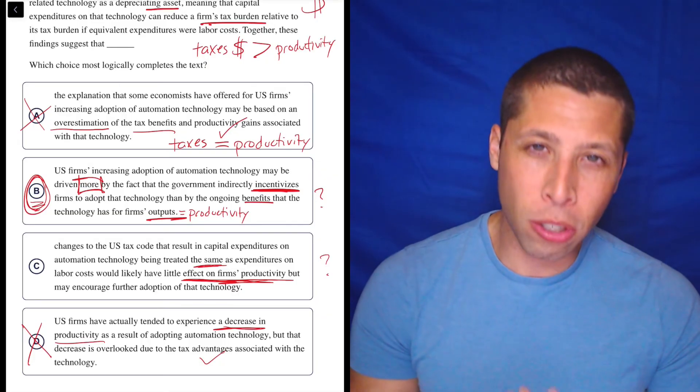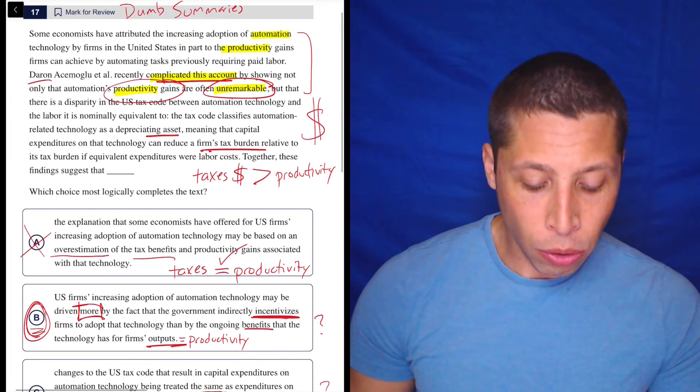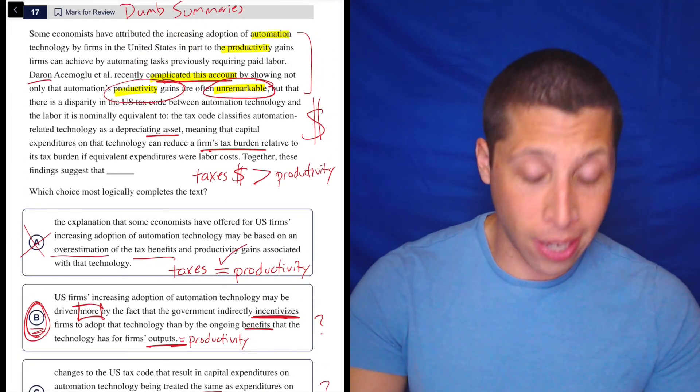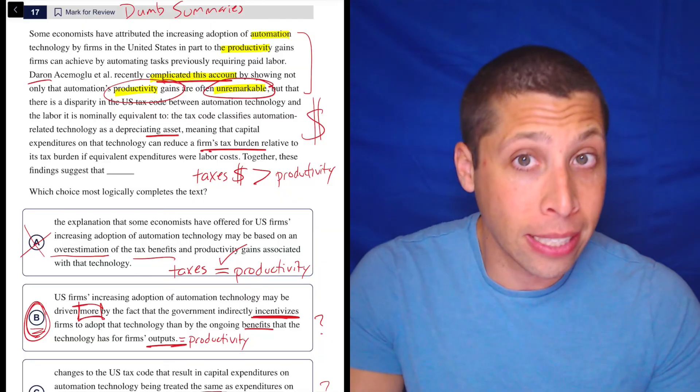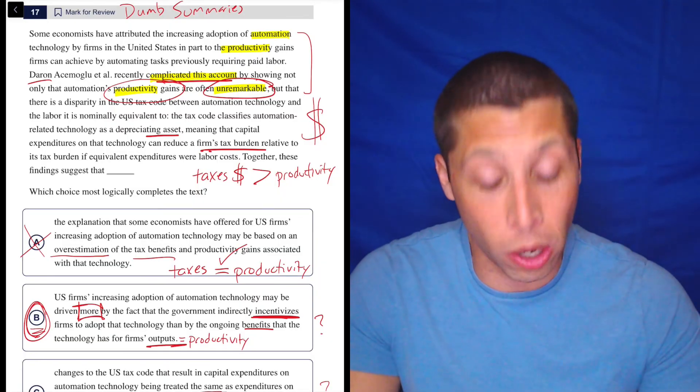So if you become dependent on the nouns, you're going to fall for traps and you're going to miss a lot of right answers. But if you think more about the descriptions, about what's happening, you'll notice words like the ones that I kind of highlighted here. It complicated this account. That's a very powerful verb. Complicate, make something worse. We talked about it being unremarkable.